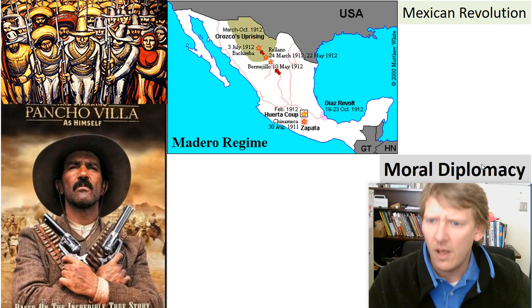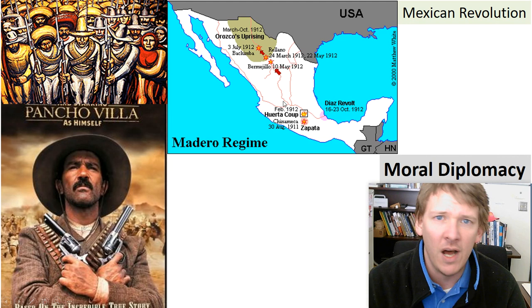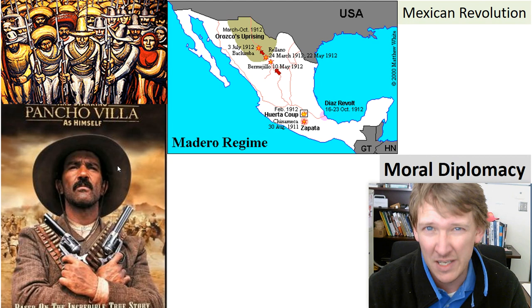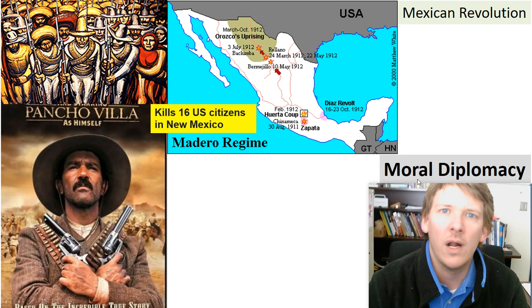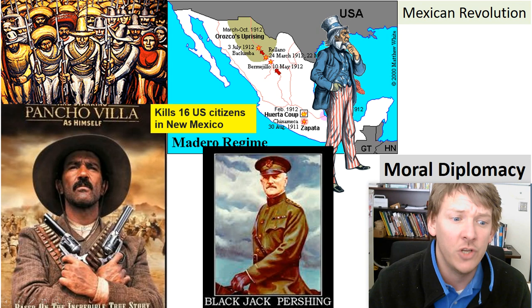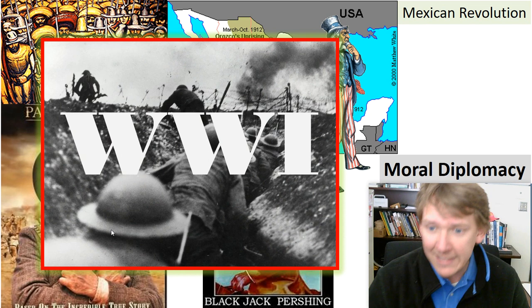To wrap up our imperialistic activities through moral diplomacy: we are morally allowed to intervene when bad things are happening. If a bad actor tries to take over a country, it's America's job to get involved. Mexico was having a revolution, and Pancho Villa was leading a revolution of the people against a regime they didn't like. Pancho Villa crossed into New Mexico and killed 16 U.S. citizens, so America said we're morally obligated to get involved. We sent General Blackjack Pershing to hunt down Pancho Villa.